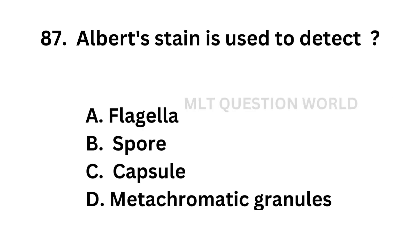Question number 87. Albert stain is used to detect: Option A: Flagella. Option B: Spore. Option C: Capsule. Option D: Metachromatic granules.